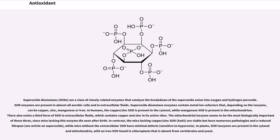In humans, the copper/zinc SOD is present in the cytosol, while manganese SOD is present in the mitochondrion. There also exists a third form of SOD in extracellular fluids, which contains copper and zinc in its active sites. The mitochondrial isozyme seems to be the most biologically important of these three, since mice lacking this enzyme die soon after birth.